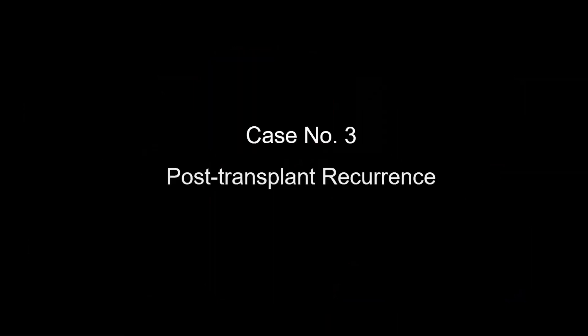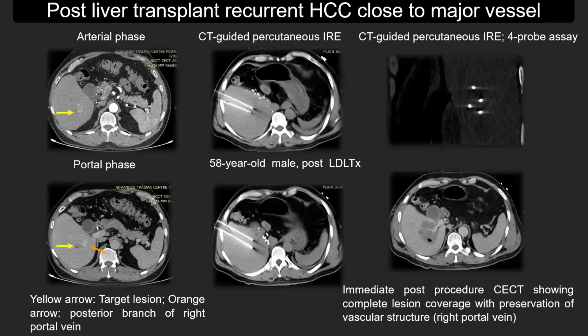Case scenario three is another post-transplant recurrence: a 58-year-old male post-live donor transplant. A hyperenhancing lesion appeared close to the right branch of the portal vein. Because we wanted less collateral damage, we used CT-guided IRE. We placed four probes, delivered the energy, and achieved a large ablation zone along with preservation of the vascular structure — specifically the right portal vein.